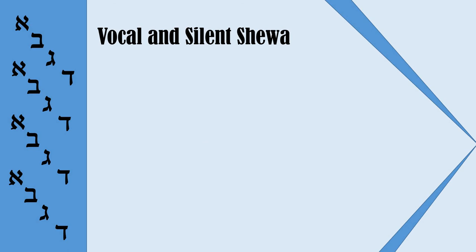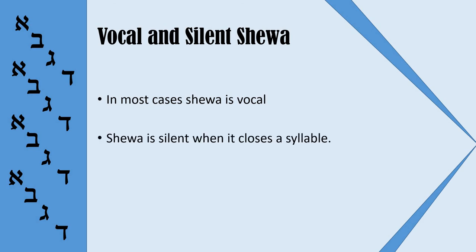Now we need to discuss two types of Sheva. There is a vocal Sheva and a silent Sheva. The rules to define when Sheva should be vocal and when it should be silent are a little bit complicated, but I will try to simplify them. In most cases, Sheva is vocal. Sheva is silent when it closes a syllable, and also Sheva is silent at the end of the word.